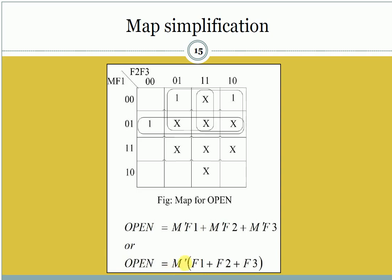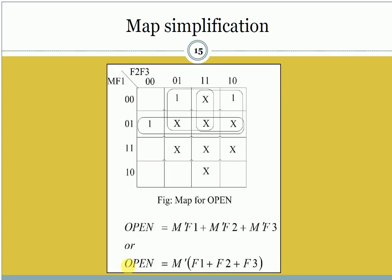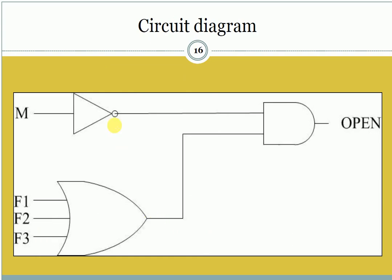Proceeding to the circuit diagram: we need one AND gate, one OR gate with three inputs, and one NOT gate. First, we calculate M prime using the NOT gate, then calculate F1 + F2 + F3 via the OR gate, then AND M prime with that result. So the output is M' AND (F1 + F2 + F3) — a pretty simple circuit.